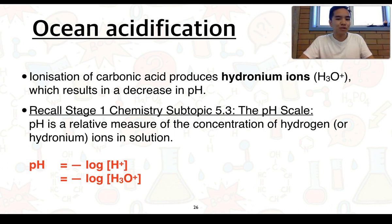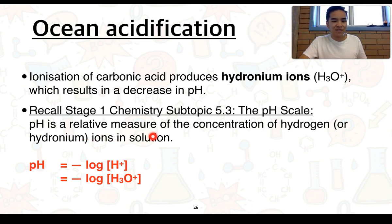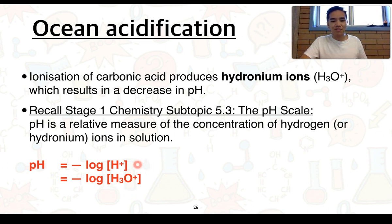This ionisation produces hydronium ions, or we can think of them as hydrogen ions. Keep in mind, hydrogen ions don't actually exist free in water or in solution. Going back to Stage 1 chemistry, Subtopic 5.3 — the pH scale — pH is effectively a relative measure of the concentration of hydrogen or hydronium ions in solution. We can represent it with the formula: pH is equal to the negative log of the concentration of H+, where the square brackets represent concentration. Or that's equal to the negative log of the concentration of hydronium ions — both essentially mean the same thing.